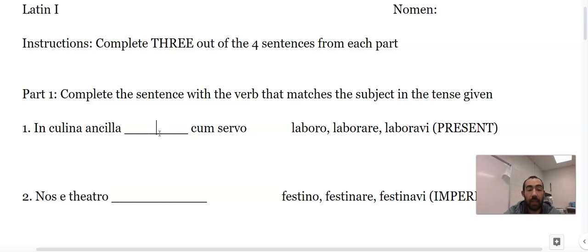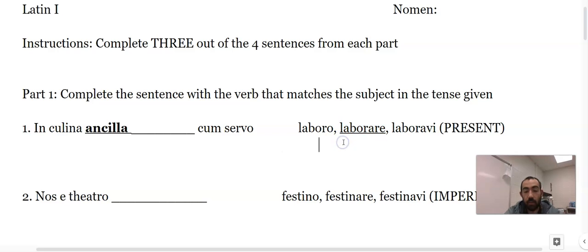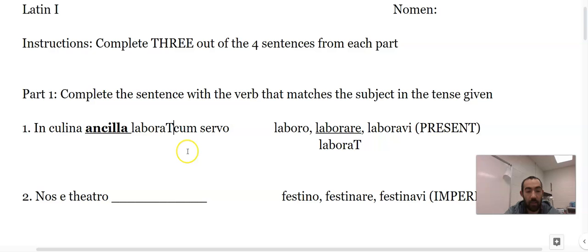And we're going to start with in colina ancilla in the present tense laborat. This word ancilla is our subject, so I'm just going to put a little underline there. And labro, since it's present tense, I got to go to this section of the verb. And I take off the re and I add my t because it's an ancilla. It's a he, she, it - it's an ancilla laborat.